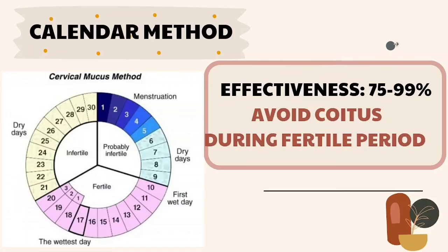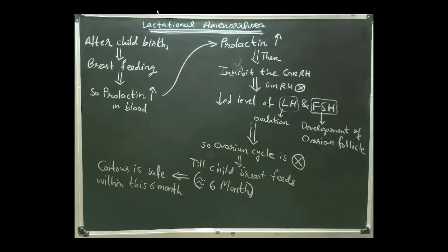The effectiveness of the calendar method is 75 to 99 percent. Next is the lactational amenorrhea method. After childbirth, the baby breastfeeds, which requires milk production. Milk production is induced by increased prolactin levels. Prolactin inhibits GnRH, which was stimulating LH and FSH. As GnRH is inhibited, LH and FSH levels decrease; LH no longer supports ovulation, and FSH no longer supports follicular development. The entire ovarian cycle is stopped and production of ovum ceases. Coitus during the six-month breastfeeding period is considered a safe period.